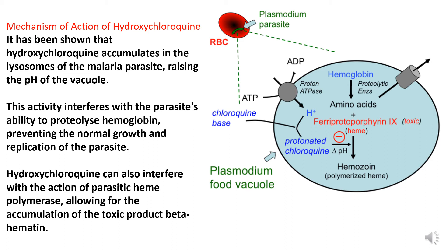Due to the increase in pH, the parasite's ability to proteolyse hemoglobin is interfered with. Hemoglobin is normally converted into heme, which is toxic to the malarial parasite. The enzyme heme polymerase converts that toxic heme into non-toxic products utilized by the parasite. By raising the vacuole pH, hydroxychloroquine interferes with heme polymerase, allowing accumulation of toxic beta-hematin, which kills the malarial parasite.